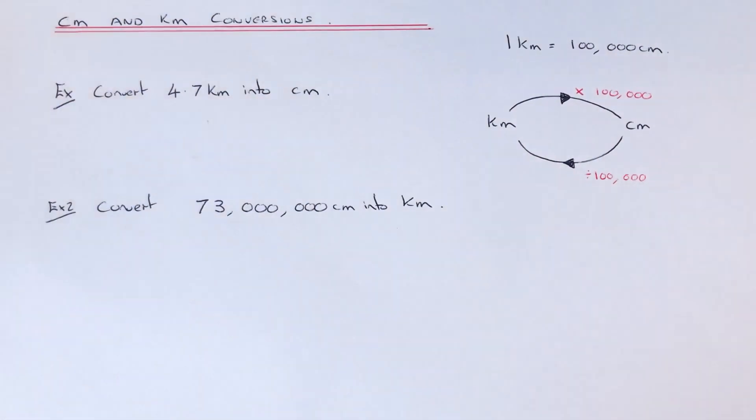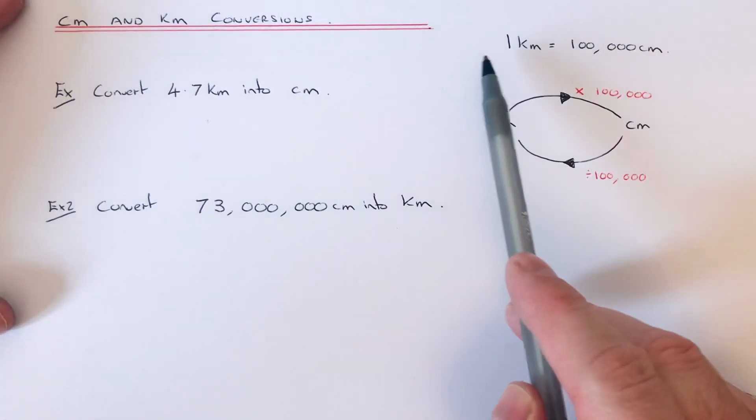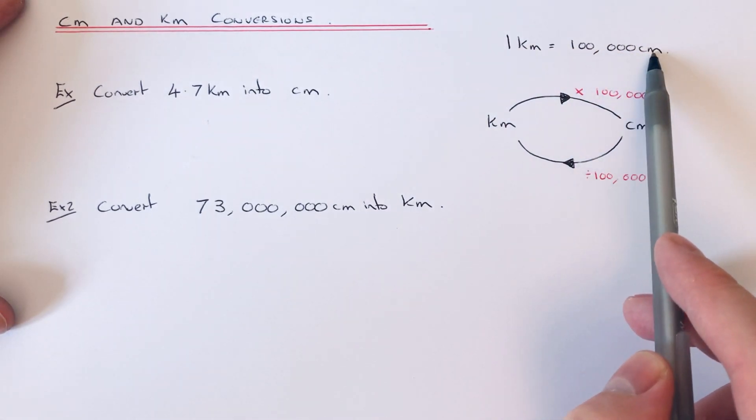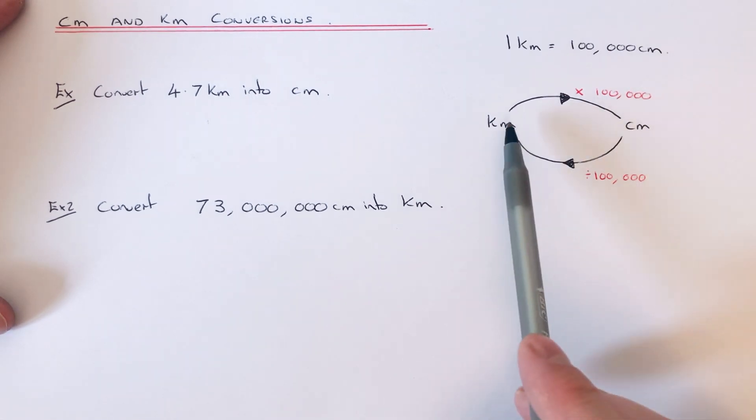Hi guys, this is Maths 3000. Today I'm going to show you how to convert between centimeters and kilometers. To do this, you need to know that one kilometer is the same as 100,000 centimeters.